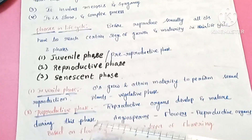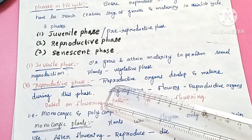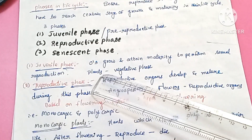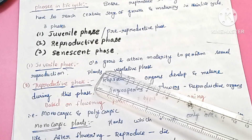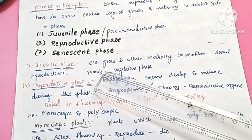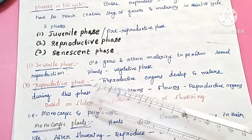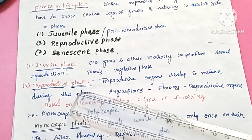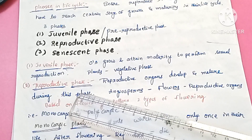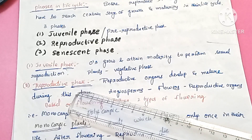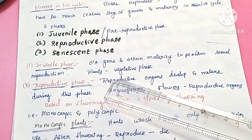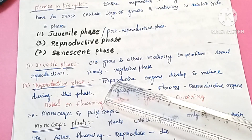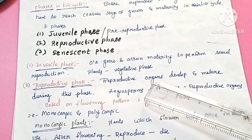In the juvenile phase, organisms grow and attain maturity to perform sexual reproduction. Both plants and animals grow during this phase. In plants, the juvenile phase is also called the vegetative phase.